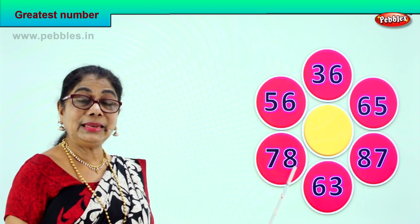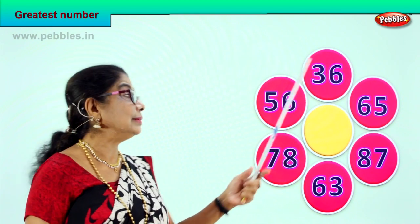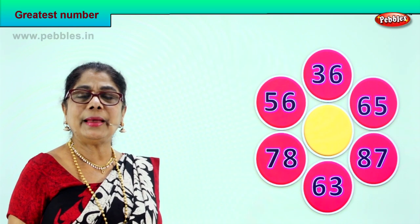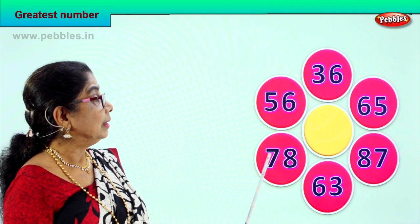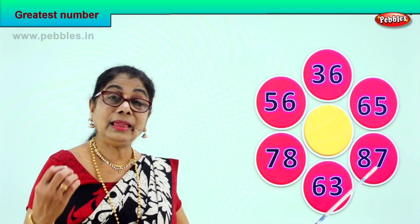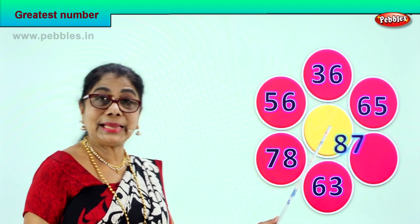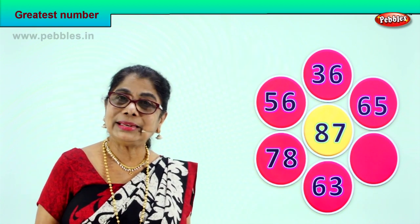Let's go to another exercise. 78 has 7 tens. 63 has 6 tens. 87 has 8 tens. 65 has 6 tens. 36 has 3 tens. 56 has 5 tens. Now, which number has the biggest number of tens in the tens place? There is 7 tens and 8 tens — 8 tens is certainly the biggest, greatest number of all. So we take and put it into the center. 87 is the biggest and greatest among all these numbers.